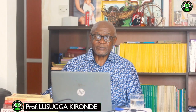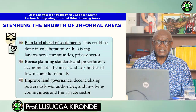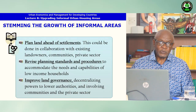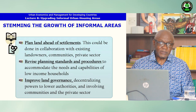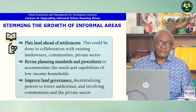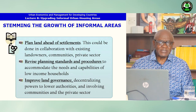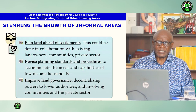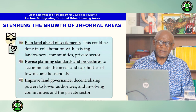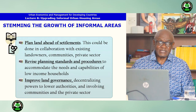How can we stem the growth of informal areas? We have seen that they are growing fast. One approach is to plan land ahead of settlements — this could be done in collaboration with existing land owners, the communities, and also the private sector. Two is to revise planning standards and procedures so that you can accommodate the needs and capabilities of low-income households — for example, reducing plot size in planned areas. We should improve land governance by decentralizing powers to local authorities and involving communities and the private sector.